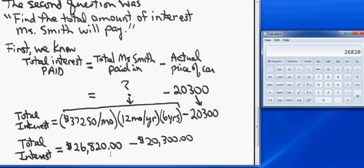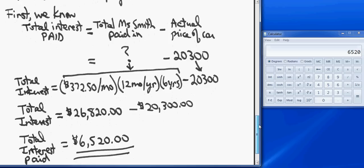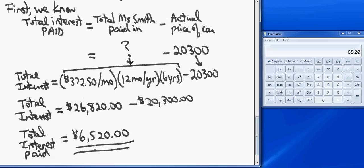Of that, $20,300 was the actual price of the car. So if you subtract that away, you're left with just interest: 20,300 equals. So Ms. Smith, over the course of that loan, paid a total interest of $6,520.